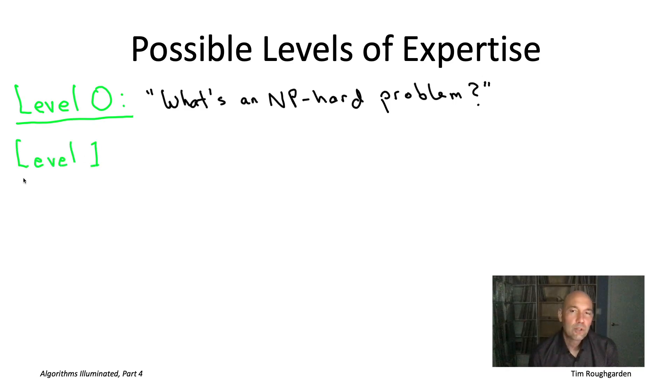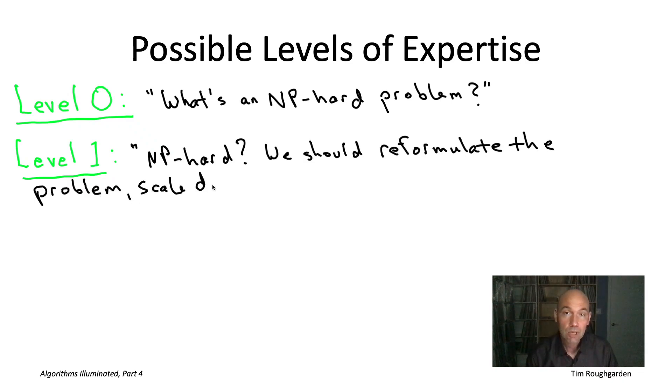Level one is cocktail party level awareness about NP hardness, where you roughly know what someone meant if they mentioned it. I'm speaking here, of course, as always, of only the nerdiest of cocktail parties. You would know that an NP hard problem, you need to do something about it. You need to reformulate the problem, scale down your ambitions for solving the problem, or invest a lot more resources, probably both human and computational, into getting that problem solved.